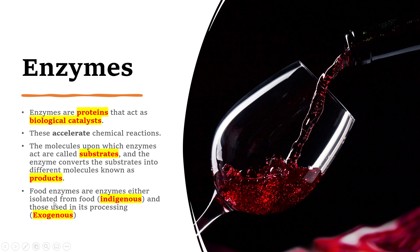The molecules upon which the enzymes act are known as substrates. For example, if we have a molecule of glucose and an enzyme converts it into pyruvic acid through glycolysis, then glucose is called the substrate. The enzyme converts substrates into different molecules known as products, which are chemically distinct from the reactant.